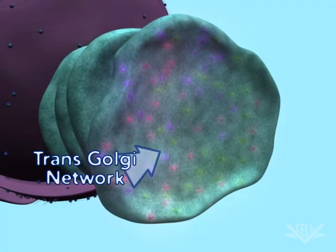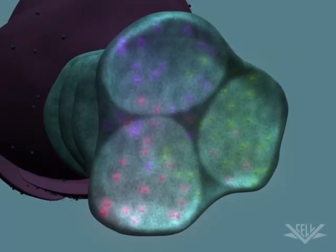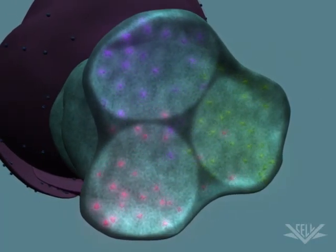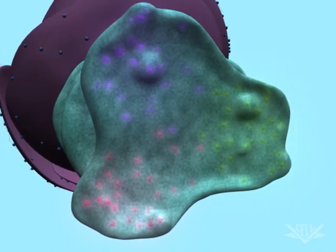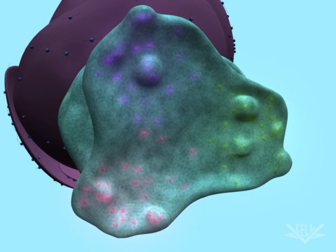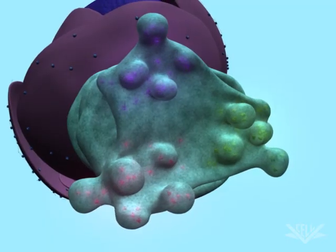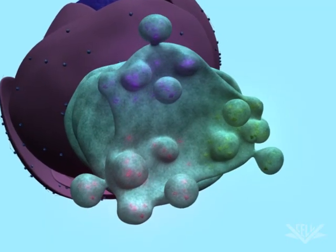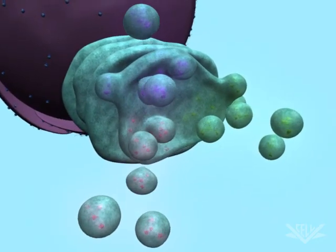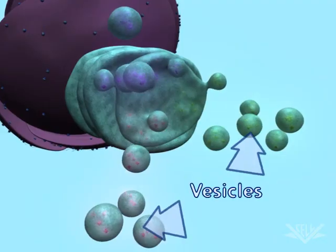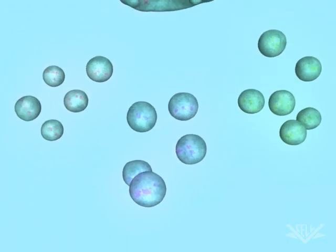Proteins are sorted within the trans-Golgi network. Proteins with the same target sequence are destined for delivery to the same location. The trans-Golgi network then buds off into vesicles, which migrate to their target location. These locations include internal organelles such as the lysosome, the digestive organelle of the cell. The vesicles can also be targeted to the cell membrane, where the targeted protein can be released from the cell for delivery elsewhere in the organism.